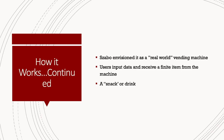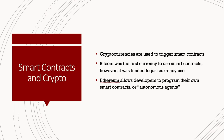To break it down in even more basic terms: Nick Szabo envisioned it as a real-world vending machine. With a vending machine, you put your dollar bill in — or nowadays swipe your credit card — press your numbers, and you receive your item, whether it's chips, a candy bar, or a soda. He envisioned smart contracts similarly, where users would input data and receive a finite item from the machine. He called that data a snack or a drink — that's the very basic intended use of a smart contract.